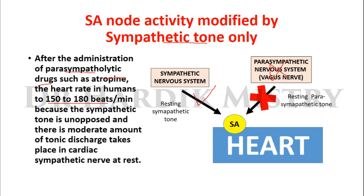Why? Because the sympathetic tone is unopposed and there is a moderate amount of tonic discharge in the cardiac sympathetic nerves at rest. Once the parasympathetic nervous system is blocked, the sympathetic activity dominates and the heart rate increases to 150 to 180 beats per minute.